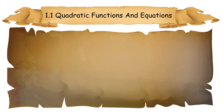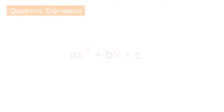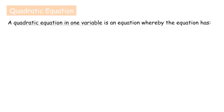First, we go to 1.1 Quadratic Functions and Equations. The name quadratic comes from quad, meaning square, because the variable gets squared. Quadratic Expression: ax² plus bx plus c. A quadratic equation in one variable is an equation whereby the equation has only one variable, for example, x.